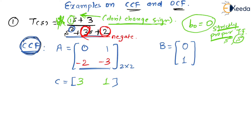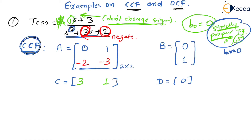What about the D matrix? D matrix is going to be 0. Why? Because D contains B₀, and since this is a strictly proper transfer function, B₀ is 0. This completes the controllable canonical form.